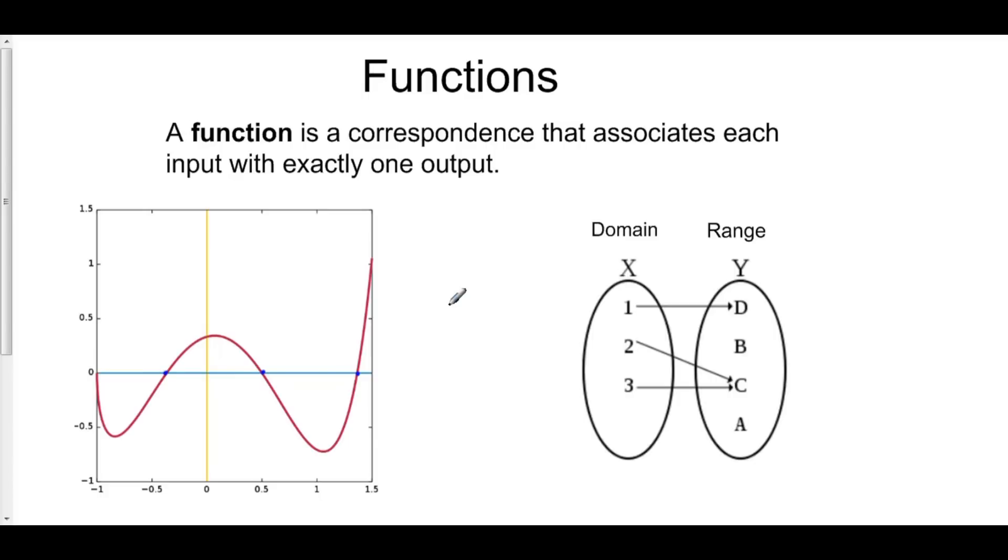Now how can you test for a function? Well, if you have the graph of it, you can do what's called the vertical line test. If you create a vertical line anywhere, it should only pass through one point. If it passes through more than one point, what that means is that your input is corresponding to more than one output. And that's not a function.